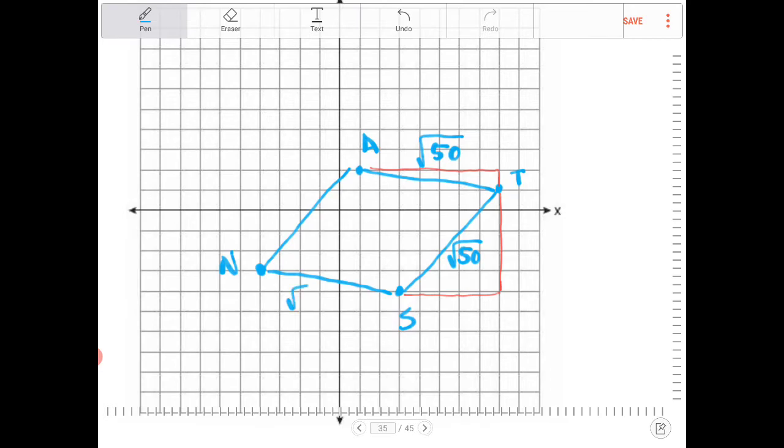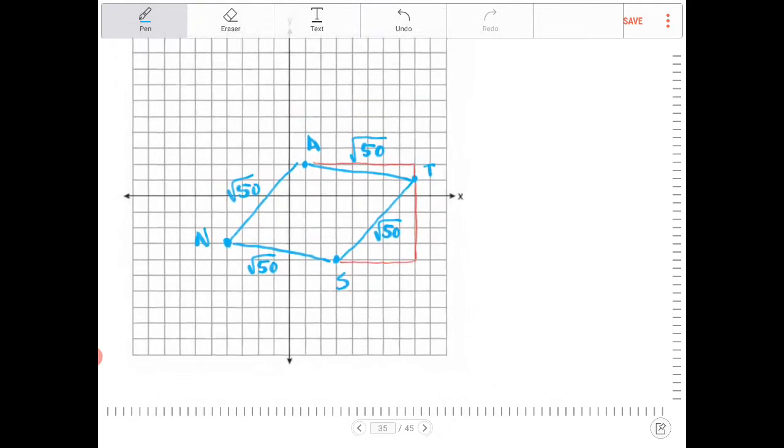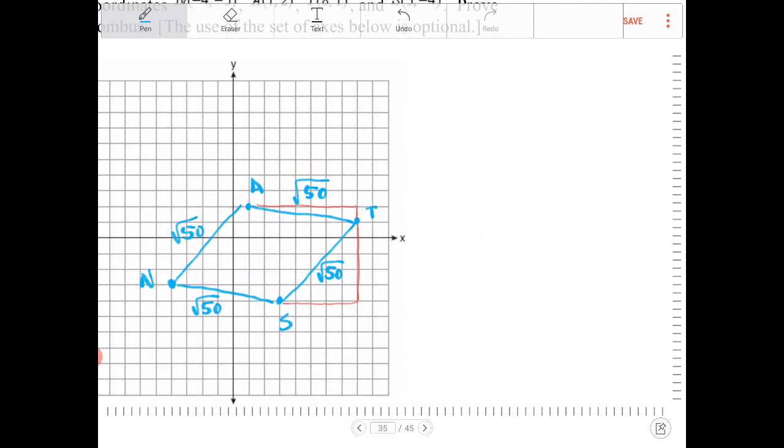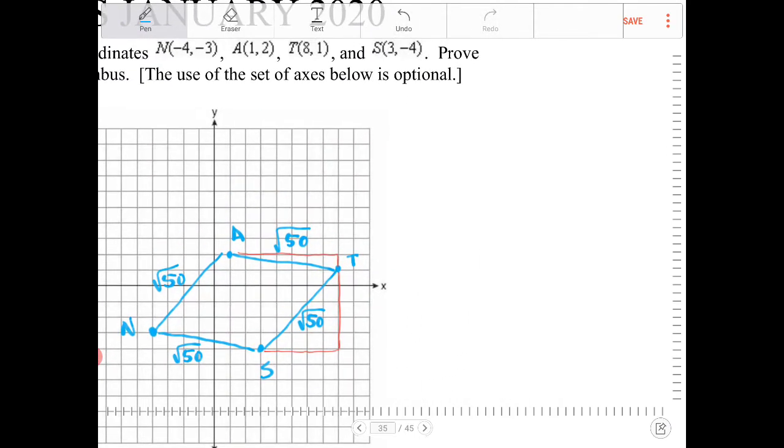And looking at this again, that would be square root of 50, and this would be the square root of 50. So just to write myself a little bit of note to fully drive the point home. N-A is equal to A-T, which is equal to T-S, which is equal to N-S, is equal to square root of 50, or 5 square root of 2. So N-A-T-S is a rhombus.